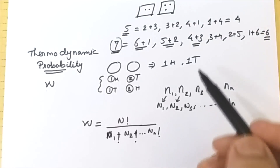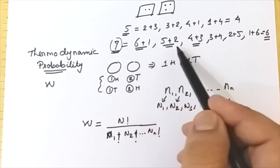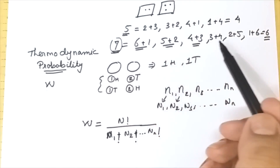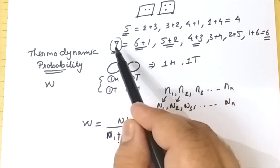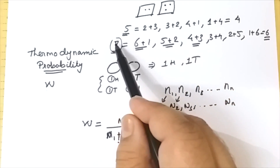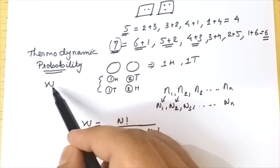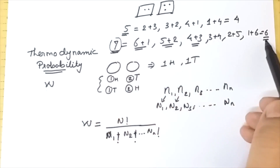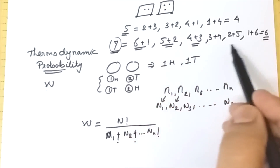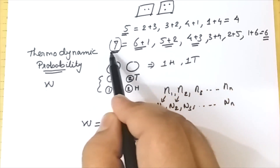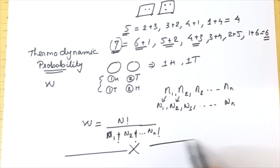So in summary: microstate is the number of different ways we can arrange the particles in the system, the properties arising due to that internal arrangement are known as macrostate, and thermodynamic probability is the total number of ways by which a microstate can be realized for a given macrostate. Thank you very much.